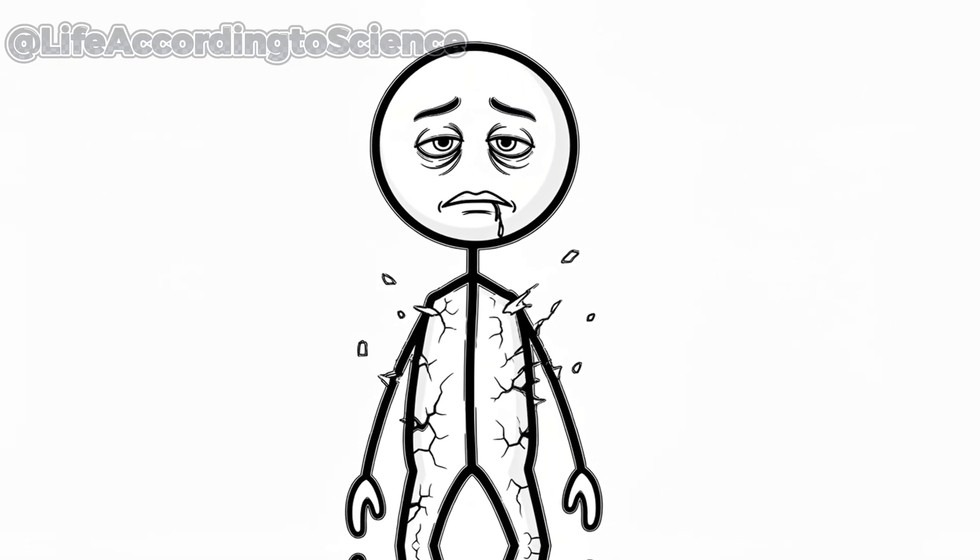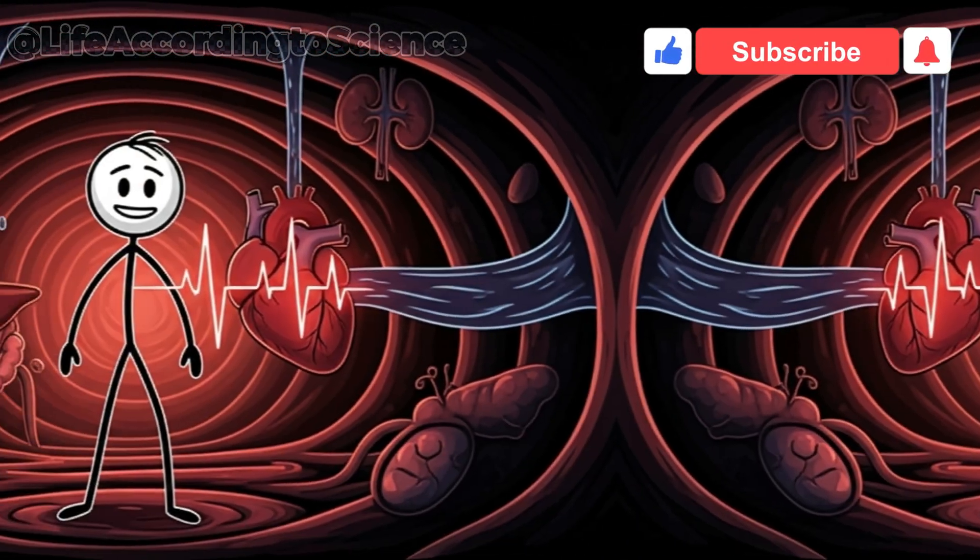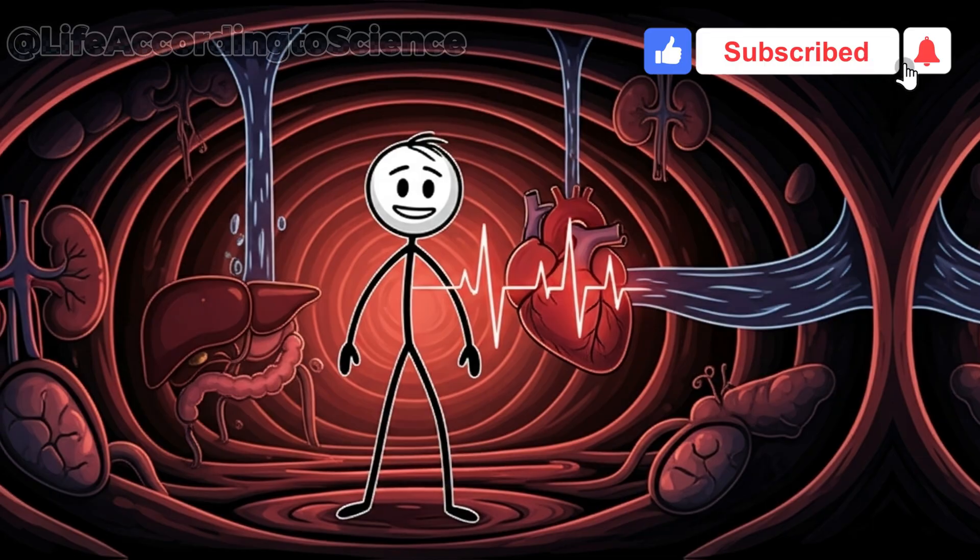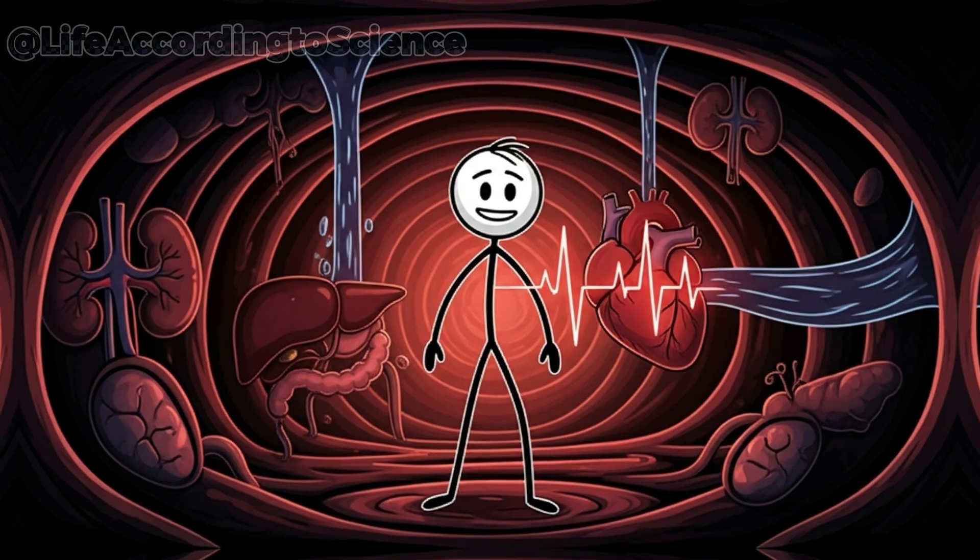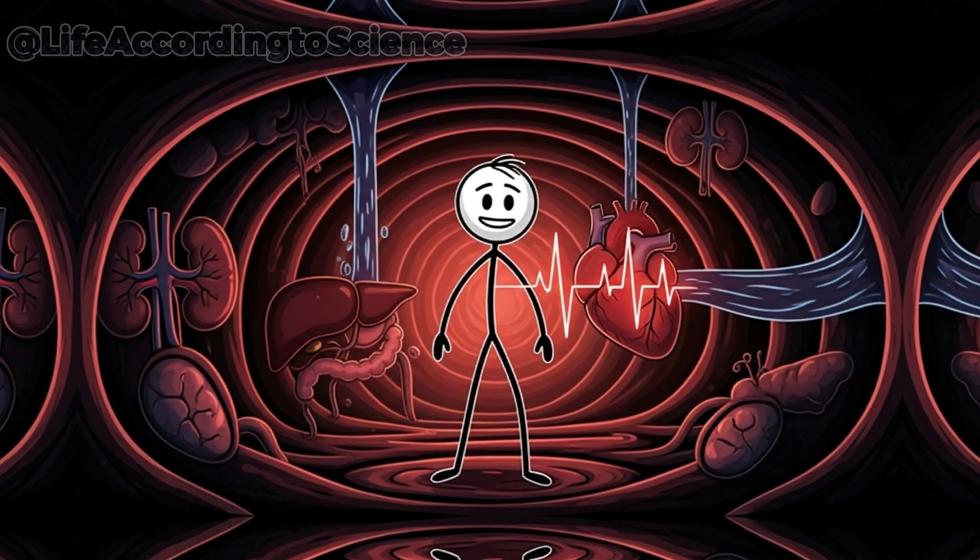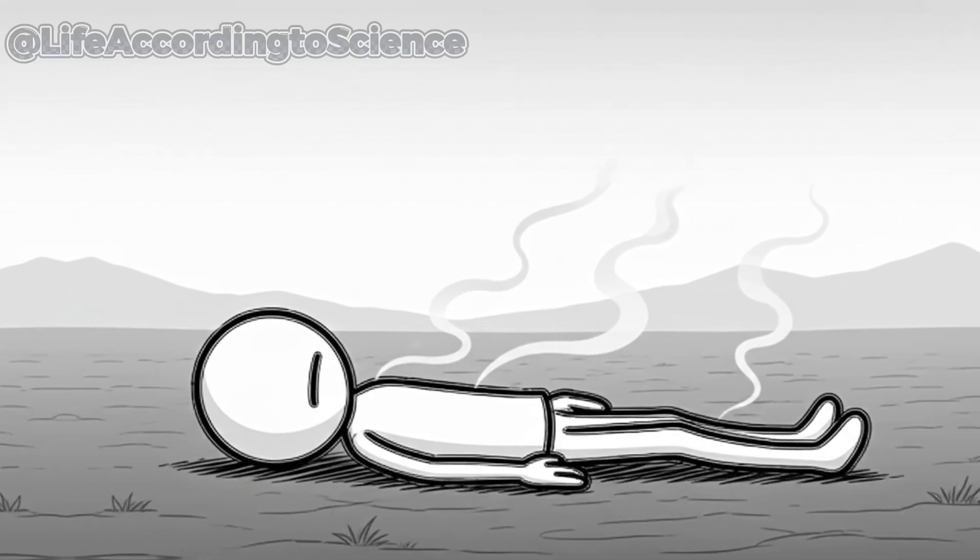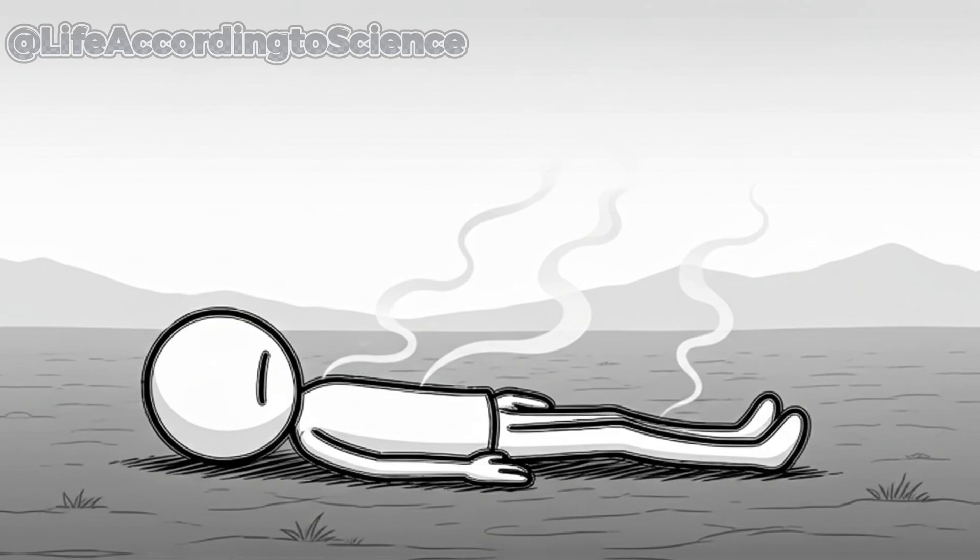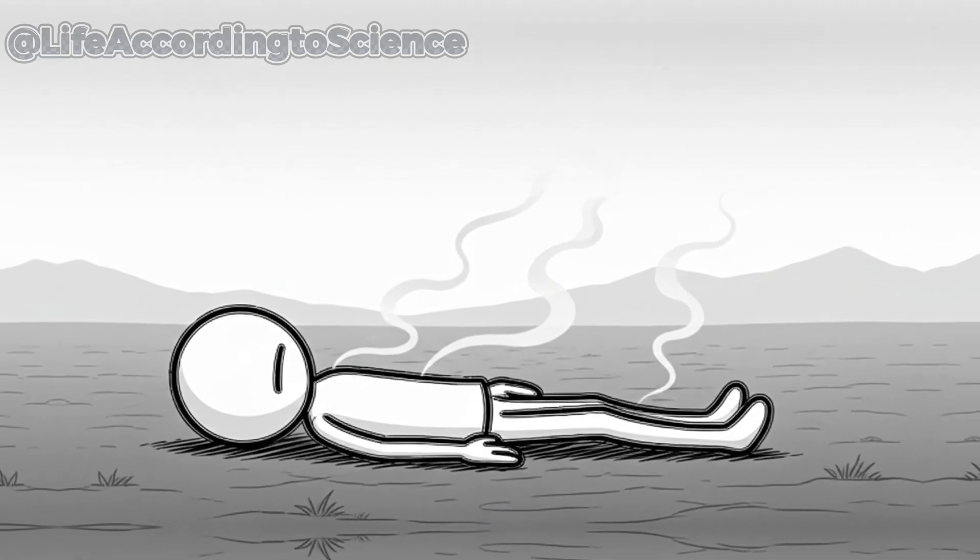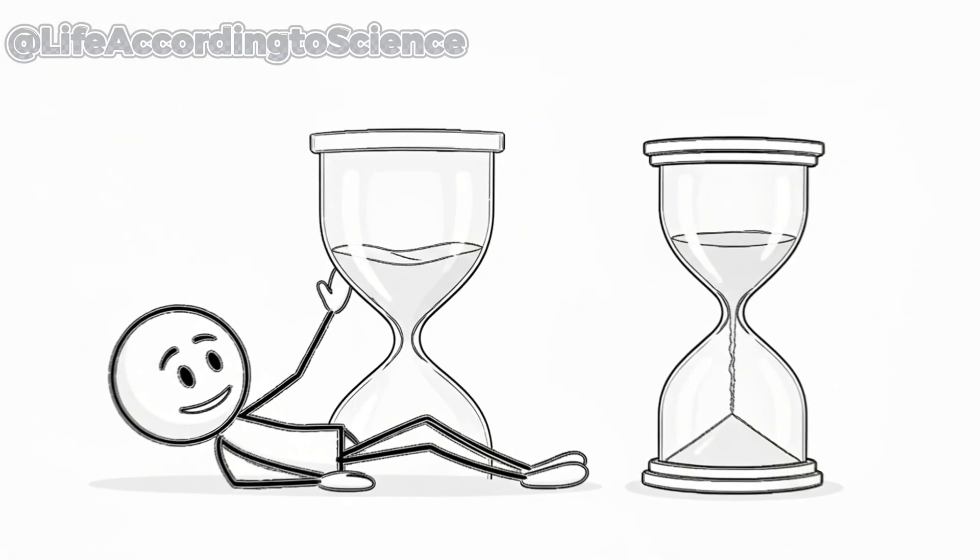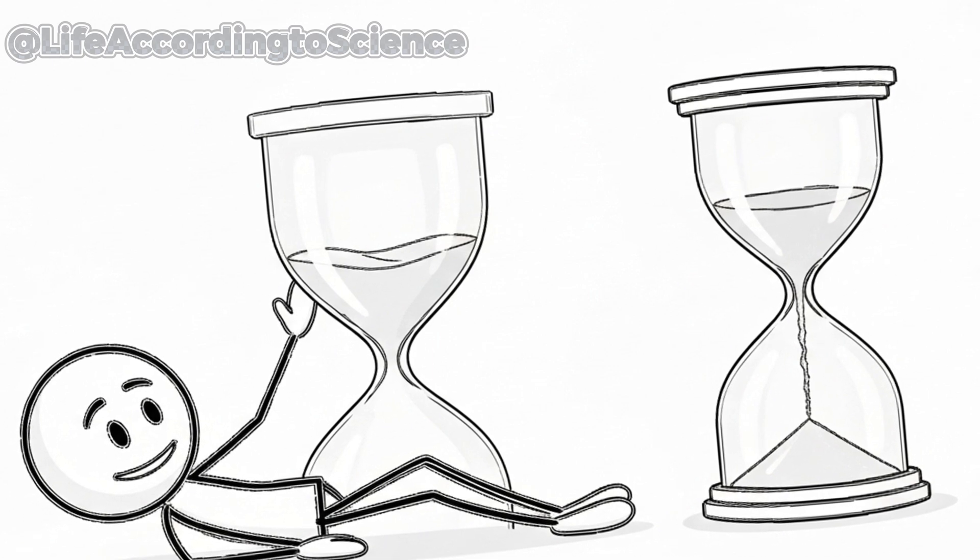The skin cracks, lips bleed, and the eyes glaze over. Internally, organs are shutting down one by one. The blood is so thick it struggles to move, and the heart races one last time before it can't anymore. The body has run out of water, and with it, life. It's a haunting reminder that humans can go weeks without food, but rarely beyond 3 to 7 days without water. In the end, it's not hunger that ends life—it's thirst.